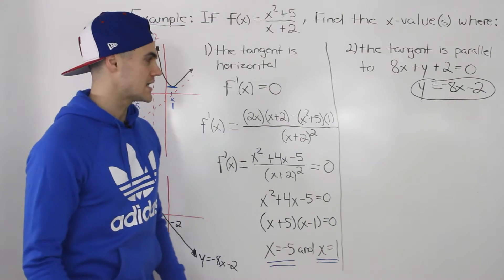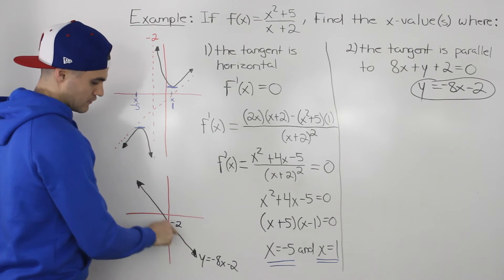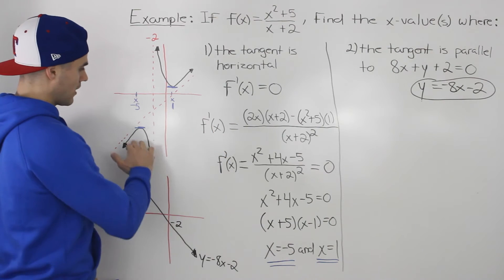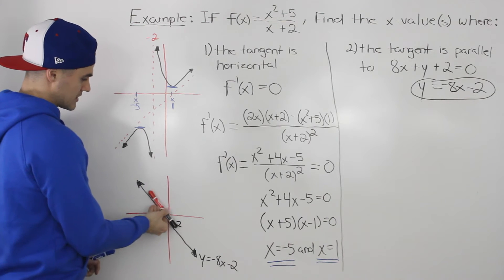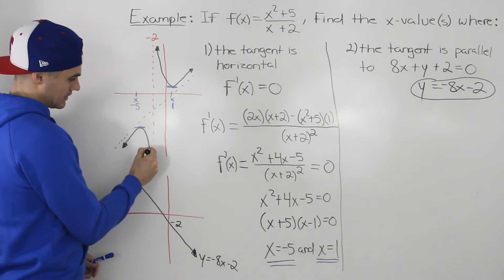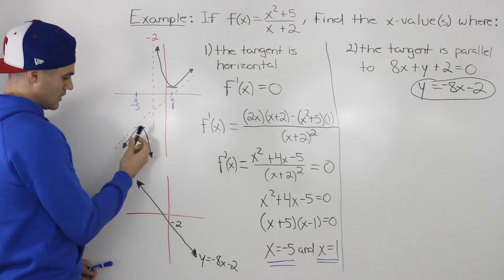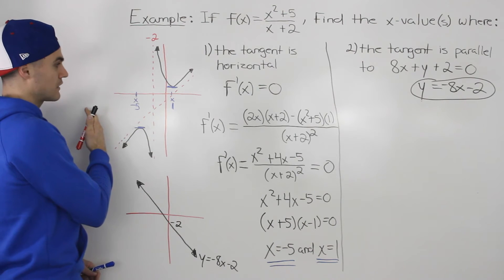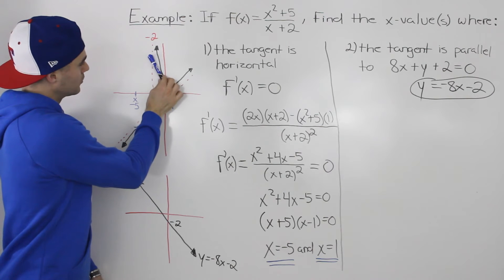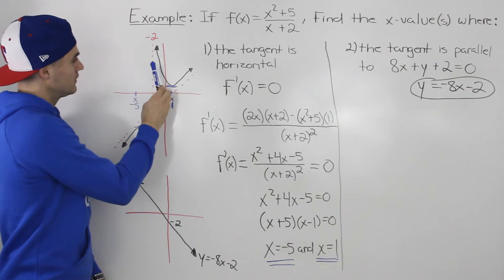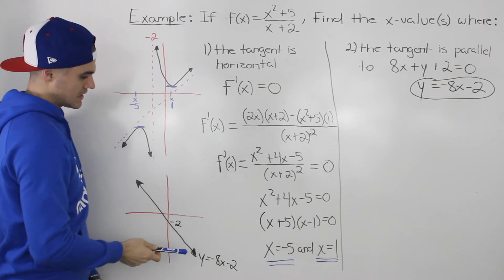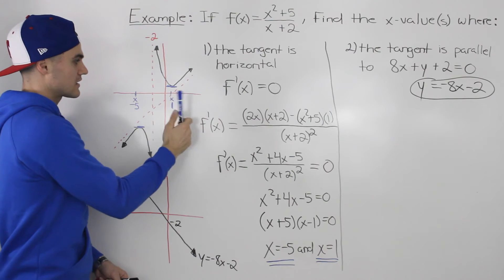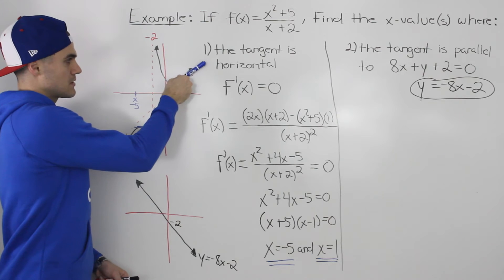Graphing this line, it has a slope of negative 8 so the line goes downward, with a y-intercept of negative 2. The question asks where on this function the tangent will be parallel to this line. In the decreasing portion of the graph the tangent is always negative, so we look there. In the portion decreasing up to x equals 1, the slope of the tangent is always negative — so we need to check if it equals negative 8 somewhere in that region.